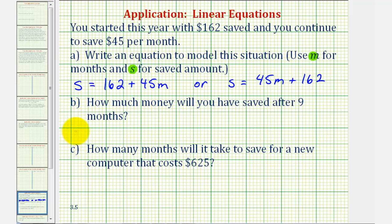We would have S equals 162 plus 45 times nine, equals 405, and 162 plus 405 is equal to 567.